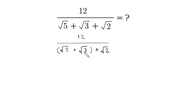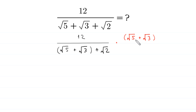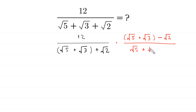To rationalize the denominator, we multiply and divide this expression by the conjugate of the denominator. The conjugate is root 5 plus root 3 minus root 2, so we multiply and divide by root 5 plus root 3 minus root 2.